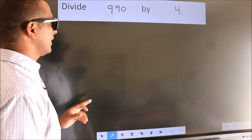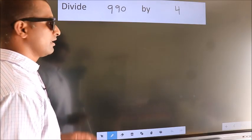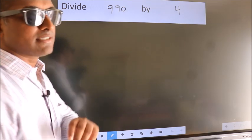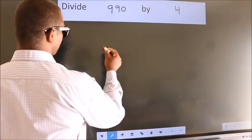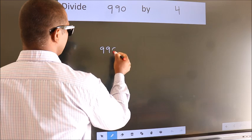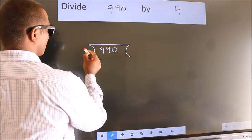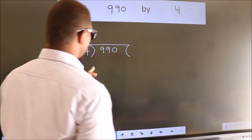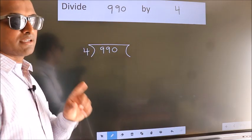Divide 990 by 4. To do this division, we should frame it in this way. 990 here, 4 here. This is your step 1.